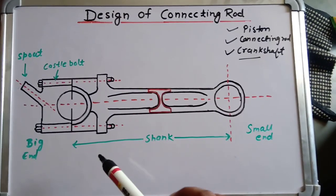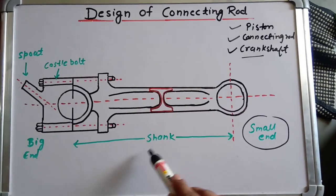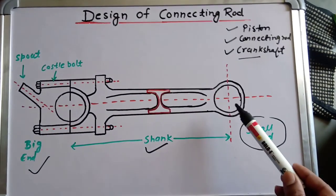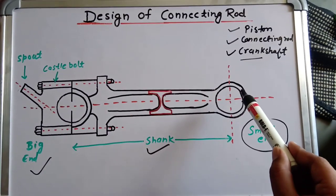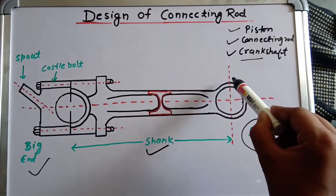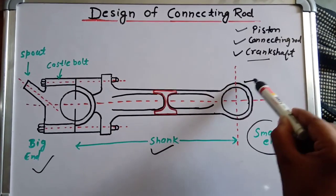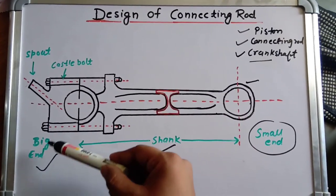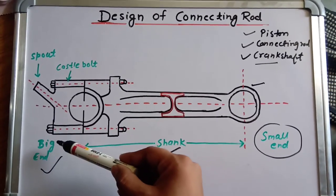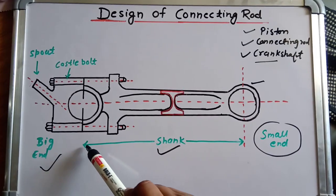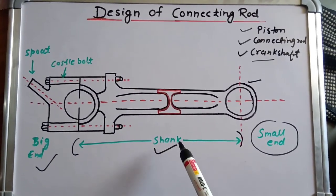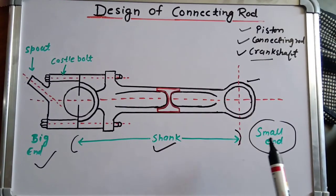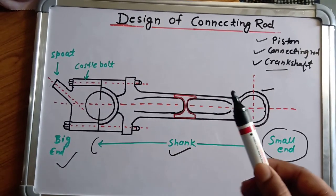The connecting rod is divided mainly into three parts: the first is the small end, the second is the shank, and the third is the big end. From the small end, it is connected to the piston by the piston pin, and a bronze bush is provided on this side. The other side is the big end, which is connected to the crankshaft by the crank pin. The length in the middle is called the shank of the connecting rod.